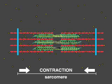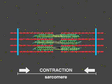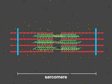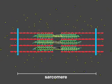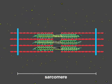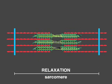Calcium is then quickly returned to the sarcoplasmic reticulum by the action of a calcium pump. Without calcium, myosin releases actin, and the filaments slide back to their original positions.